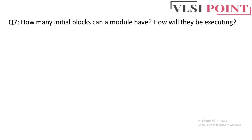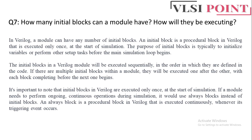Next question: how many initial blocks can a module have and how are they executed? In Verilog, a module can have multiple initial blocks. Each initial block is used to define the initial condition or behavior of signals in simulation, and is executed only once at the beginning of simulation. Multiple initial blocks within a module are executed sequentially in the order they appear, following a top-down approach.